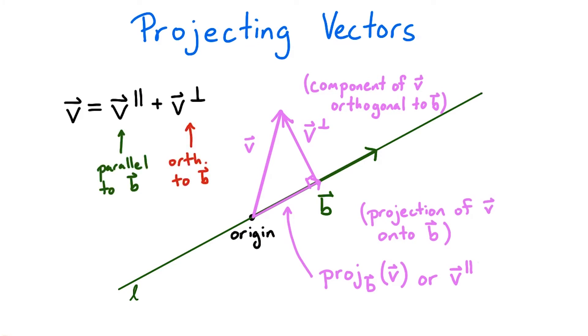We have written v as a sum of two vectors, one that is parallel to b, and the other that is orthogonal to b. This is something that occurs often in mathematics. Given a non-zero basis vector, we can express any vector as a sum of two vectors, one that's parallel to the basis vector, and one that is orthogonal to the basis vector.